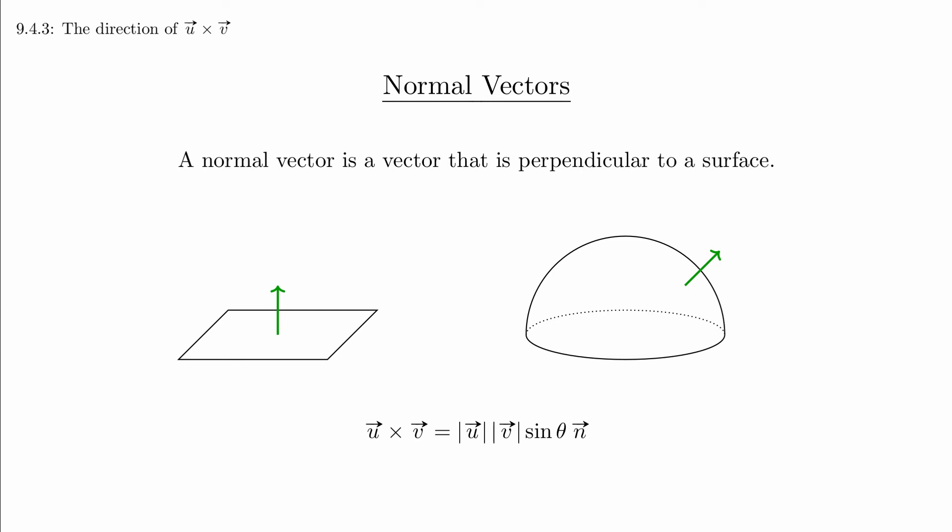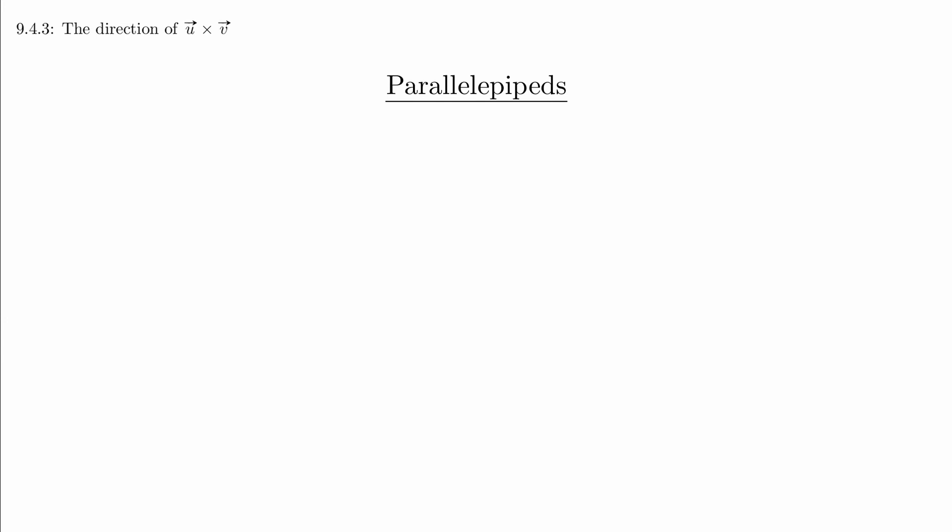Notice that this formula isn't saying much more than the previous formula. The normal vector is just saying what direction the cross product points, and the length of the same value we saw earlier. But the addition of this direction does create a three-dimensional picture for us that we didn't have when we were just looking at the magnitude.